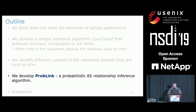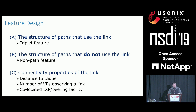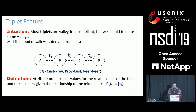Our solution to the AS relationship inference is PropLink, which is a probabilistic AS relationship inference algorithm. We designed a set of features for capturing routing behavior. A link can be categorized by three attributes: the structure of the paths that use the link, the structure of the paths that do not use the link, and the connectivity properties of the link. For each category, we designed one or more features. The first feature is the triplet feature. The triplet feature considers link triplets that appear in paths. For example, the links AB, BC, CD with link types T1, T2, T3 constitute a link triplet.